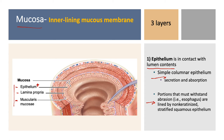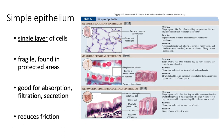Simple epithelium has a single layer of cells, found in fragile protected areas like inside vessels and the GI tract, and is good for absorption, filtration, and secretion. The type we see in the majority of the GI tract — the intestines and stomach — is simple columnar epithelium. Simple means one layer; columnar describes the column shape of the cells. These column-shaped cells arrange in one layer and are involved in absorption and secretion.